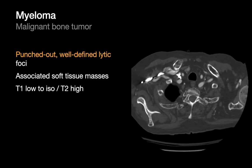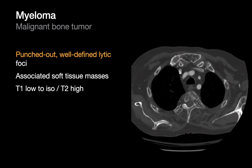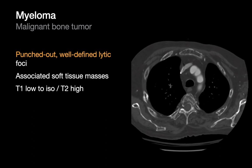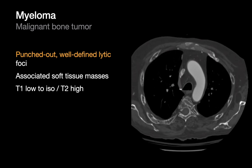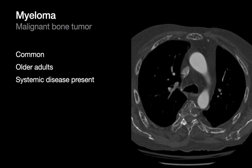Multiple myeloma is the other aggressive bone tumor you'll encounter in the chest wall. It tends to be quite diffuse in distribution and will often appear as punched-out lytic lesions. Sometimes associated soft tissue masses are seen. It's a common disease encountered in the elderly population.